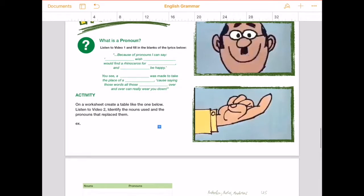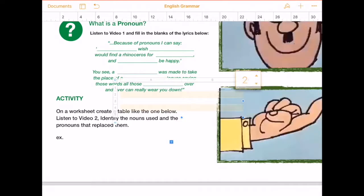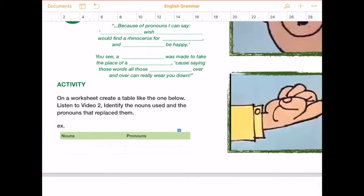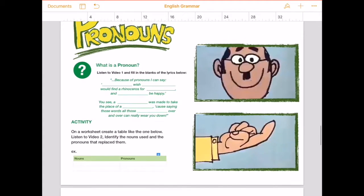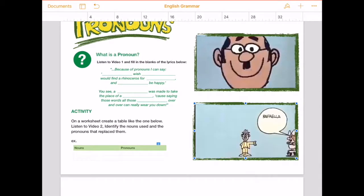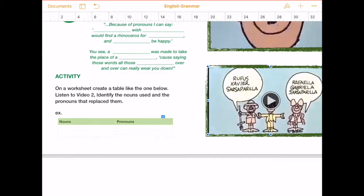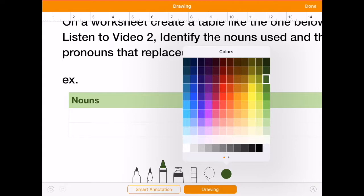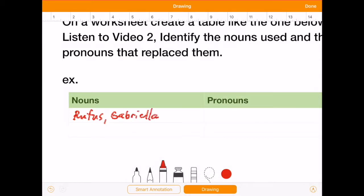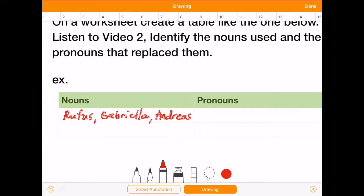For my second video I could do the same thing and maybe a little bit of an exercise. I have my second video here. My activity says on a worksheet create a table like the one below so now I have to add a table. I want to make sure that there's enough room in my table. Since this is just an example my goal is to just let them see what it is that I want them to do on a worksheet. I could ask them to do it on a piece of paper and they can turn that in or I could ask them to use it on numbers and let them email or airdrop it to me. I probably want them to just write the names of the people so I'll go ahead and write that out and the pronouns that they use to replace the nouns.